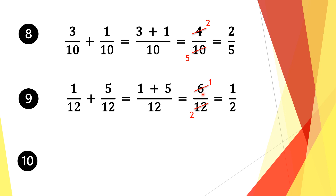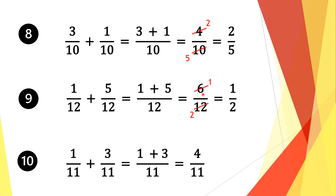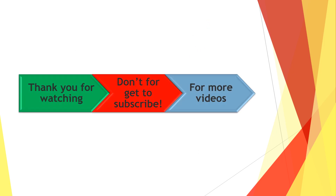Moving on to our last question, question 10. We have 1 eleventh plus 3 elevenths. Again, we have a common denominator in both of these fractions, and we take a common factor of 11. 11 divided by 11 is 1, and 1 times 1 is 1. Then we do the same for the second fraction: 11 divided by 11 is 1, and 1 times 3 is 3. We add the numerators, which gives 4, and bring along the denominator 11. We can't simplify any further, so our solution is 4 elevenths. That's all for today — thank you for watching, and don't forget to subscribe for more videos.